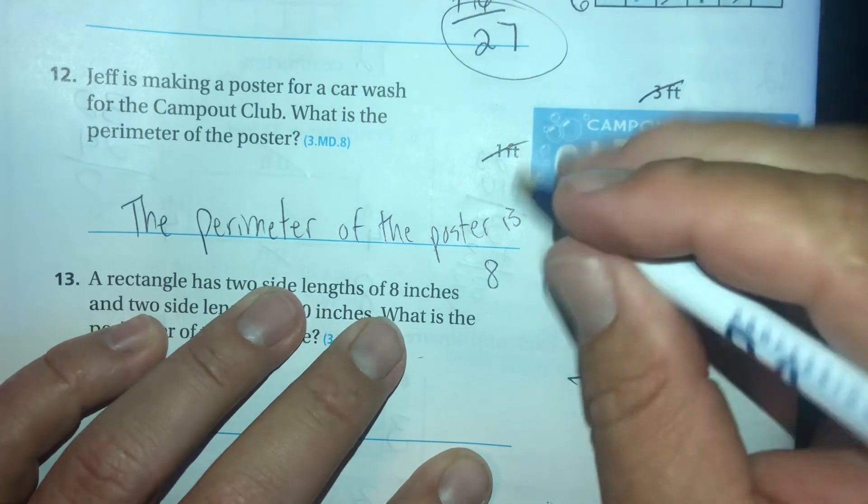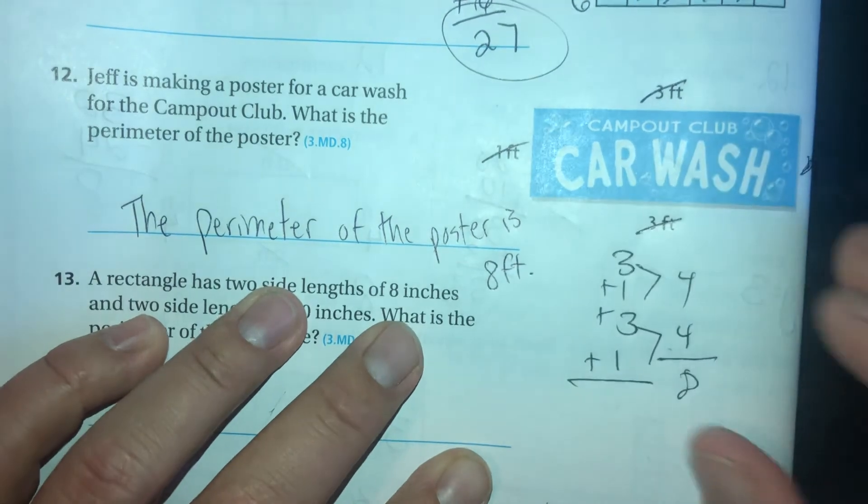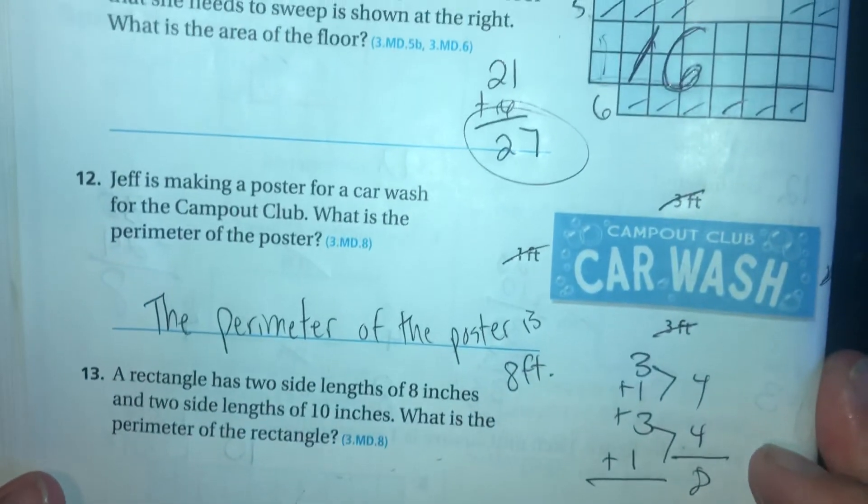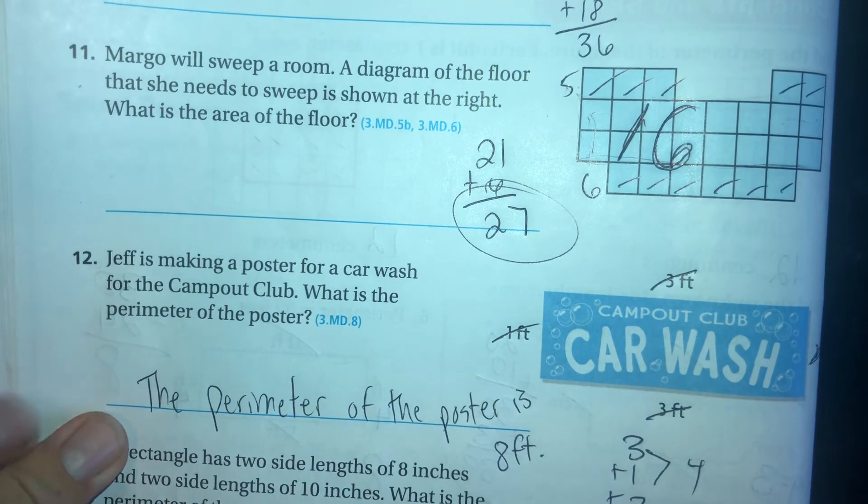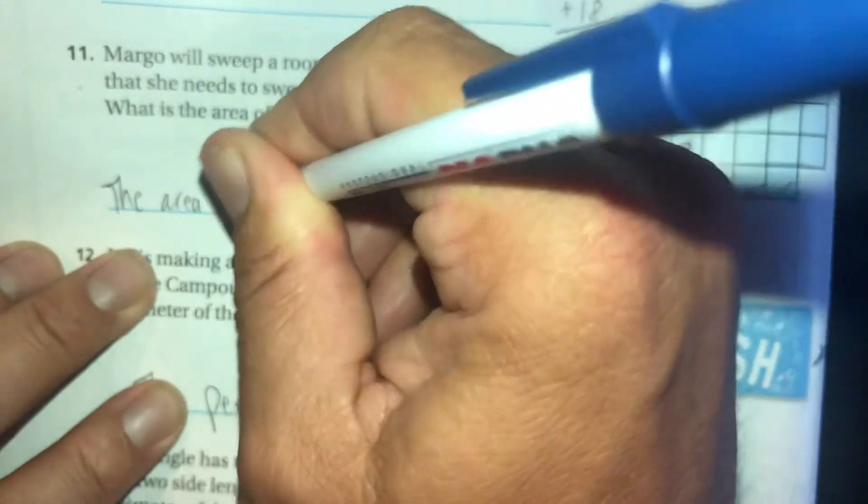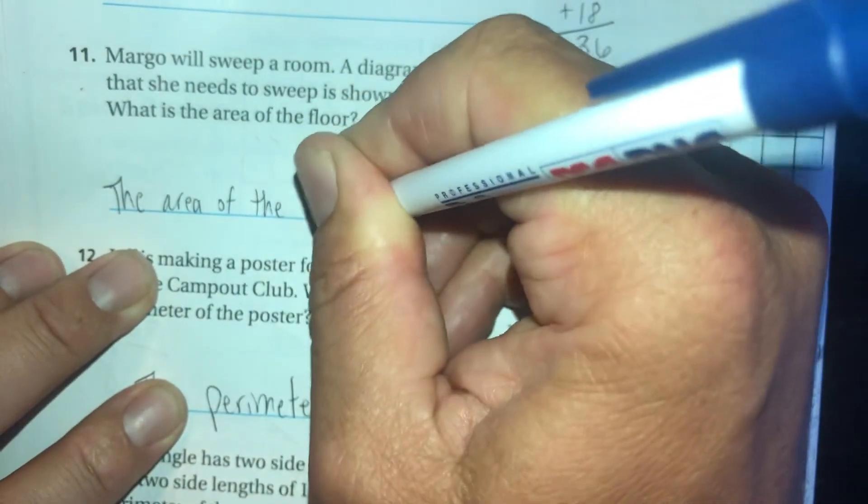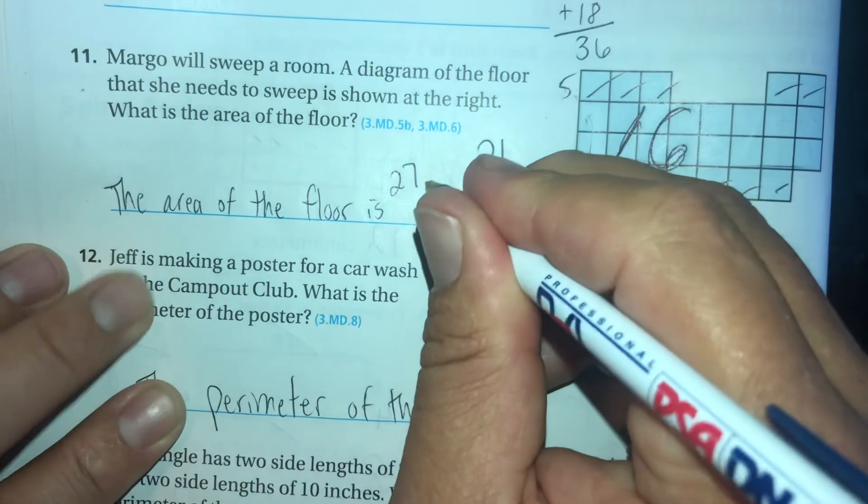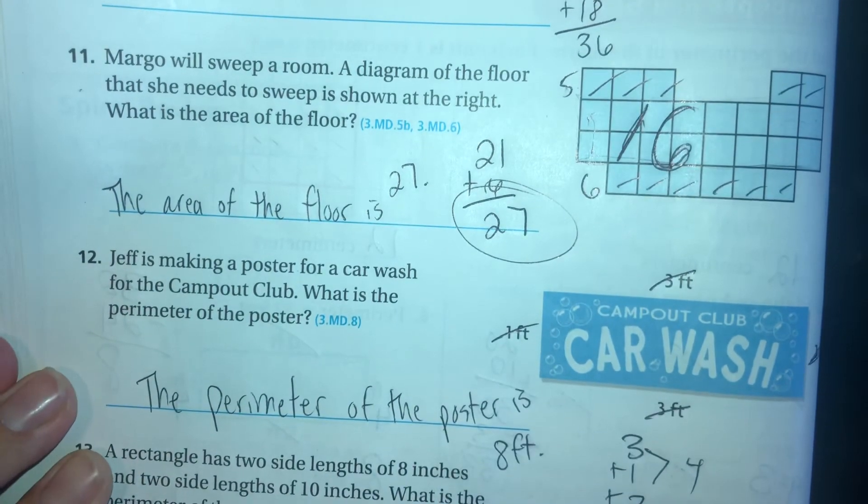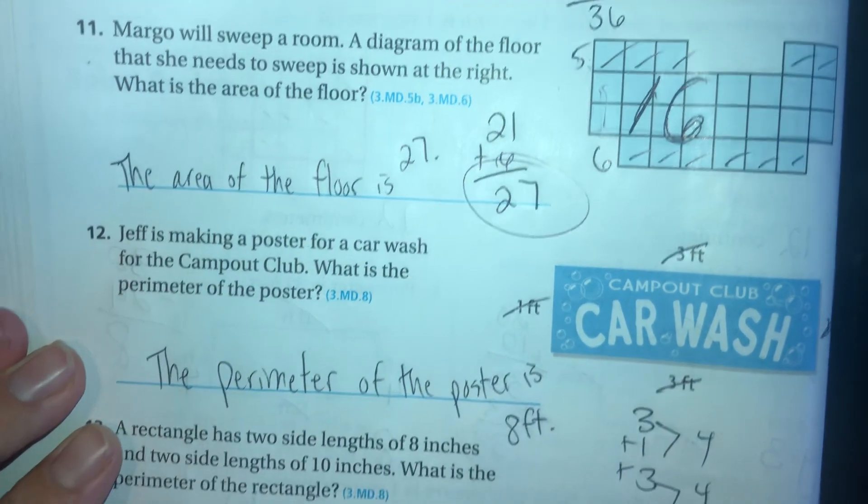And I need a complete sentence up here too. I got lazy. Margo will sweep the room. What is the area of the floor? The area of the floor is 27. I'll make sure I did a complete sentence up there just like I did there.